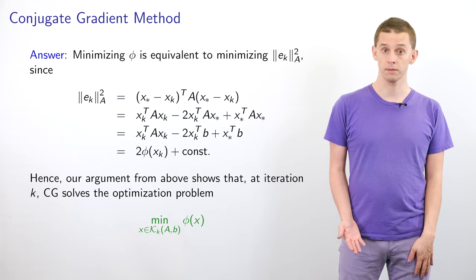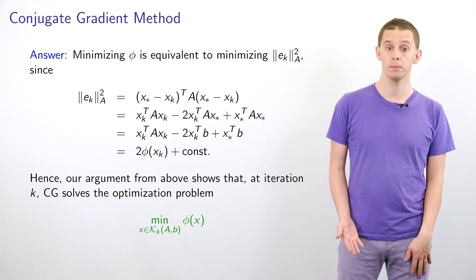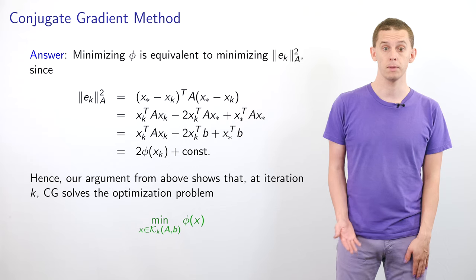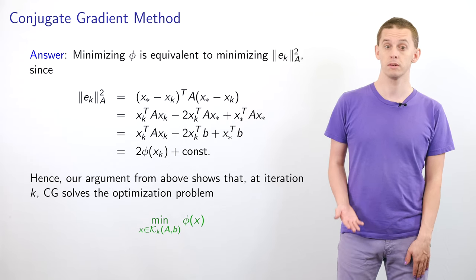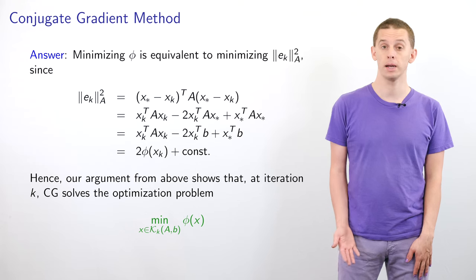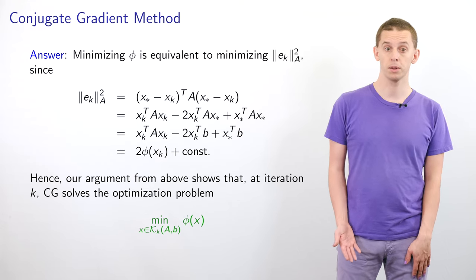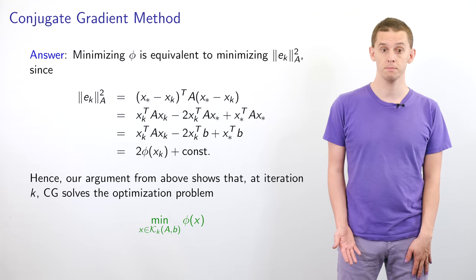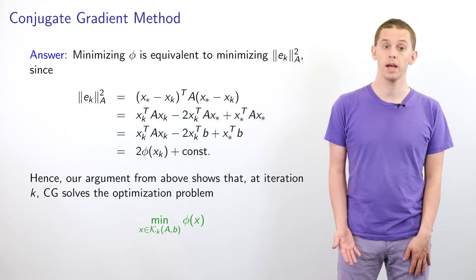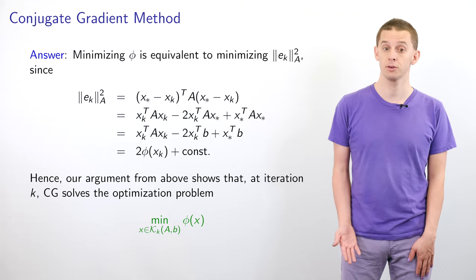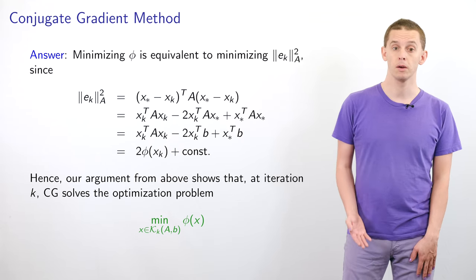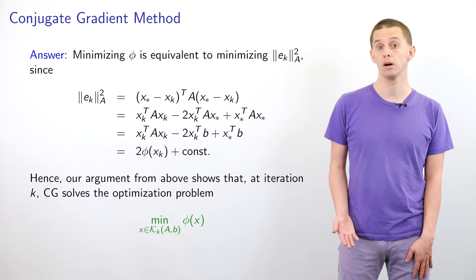Minimizing φ is equivalent to minimizing the A-norm squared of e_k, since the A-norm squared of e_k expands to x_k^T A x_k - 2 x_k^T b plus a constant. Hence at iteration k, CG is solving the optimization problem of finding the minimum of φ(x) over the Krylov subspace K_k(A,b).